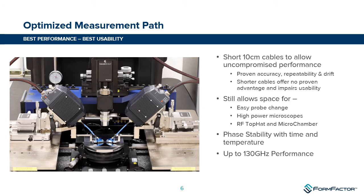The optimized measurement path is really important to keep insertion loss reasonably low. We use short 10-centimeter cables and have made sure not to add any bends into the cables to prevent unwanted reflections, while still allowing enough space for easy access to the system — making it easy to change probes and accommodate high power microscope objectives. The setup is also MicroChamber and top hat compatible for a shielded measurement environment. The system is very phase stable with time and temperature, so there are very little calibration errors — even if the room temperature changes slightly, there is no degradation or instability in the measurement — and this all works up to 130 gigahertz.